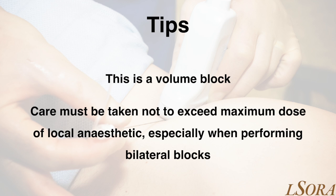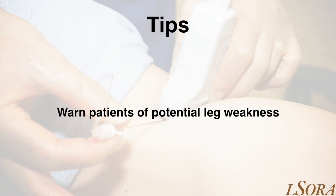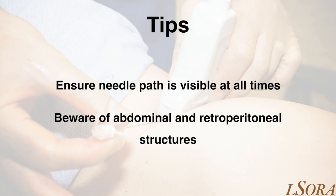This is a volume block, often using 20 to 30 mls of local anaesthetic per side. Please carefully work out the maximum allowable dose of local anaesthetic and stay within this limit, especially if performing bilateral blocks. There is always potential, especially with the anterior or transmuscular quadratus lumborum block, for the local anaesthetic to affect lumbar nerve roots — so please warn your patient about the potential for leg weakness. Ensure the needle path is visible at all times and kept away from abdominal and retroperitoneal structures such as the kidney.